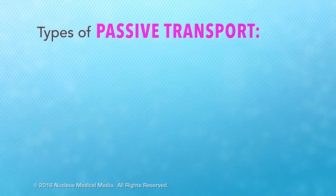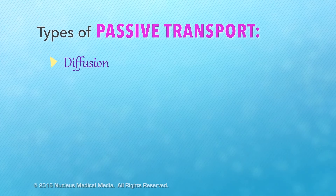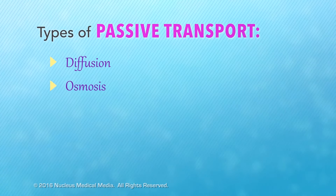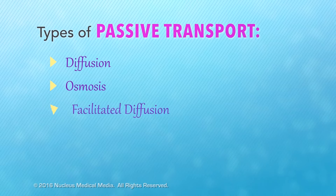What are the types of passive transport? They are diffusion, osmosis, and facilitated diffusion.